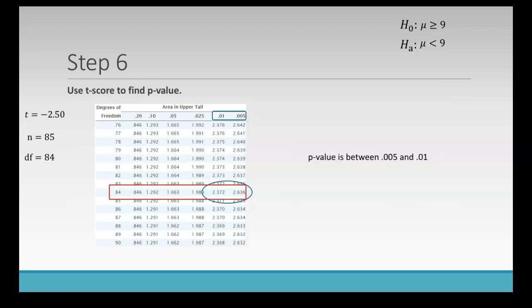So the p value is between 0.005 and 0.01. So sometimes when we use a t score, we won't be given an exact value for our p value. It's going to have to be between two amounts like in this situation.